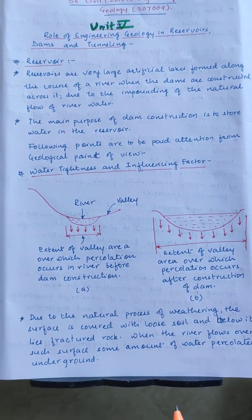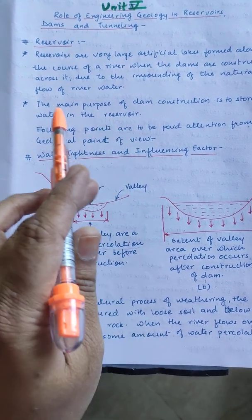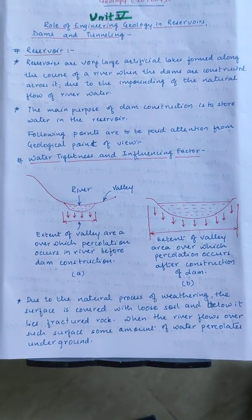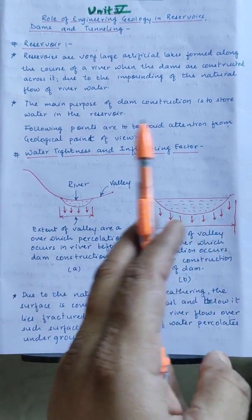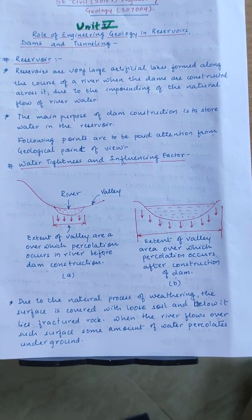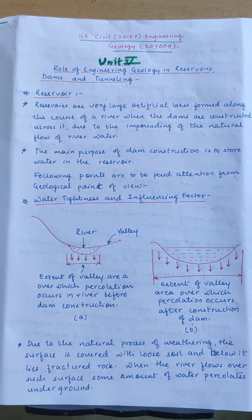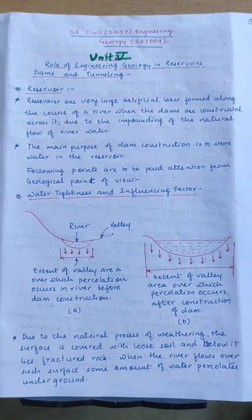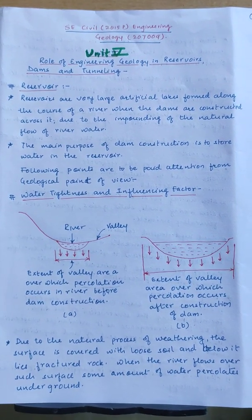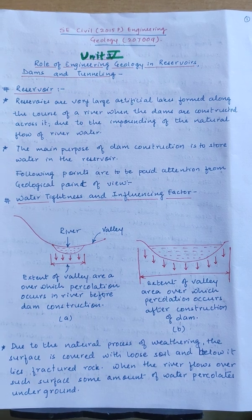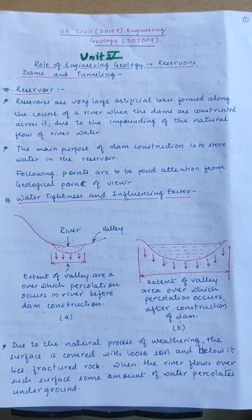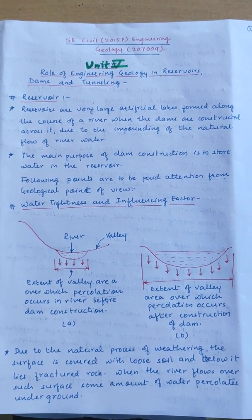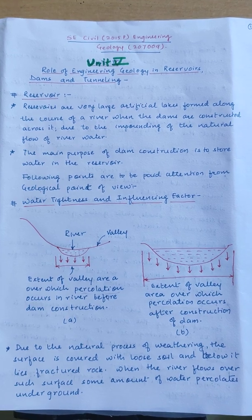Reservoirs are very large artificial lakes. These are formed across a river and are formed for the construction of dams. The main purpose of dam construction is to store water. So when we take a general example of a reservoir, your glass from which you drink water is also a reservoir. A bottle in which you store water is also a reservoir. But when we speak of water storage on a large scale, it is called a dam.